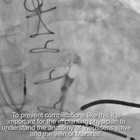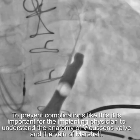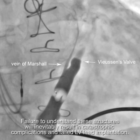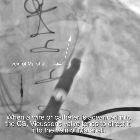To prevent complications like this, it is important for the implanting physician to understand the anatomy of Vusensian's valve and the vein of Marshall. Here you have Vusensian's valve and the vein of Marshall. The vein of Marshall is illustrated coming off just below Vusensian's valve. Vusensian's valve is preventing contrast from being injected into the great cardiac vein, or the extension of the coronary sinus — the main body of the CS.